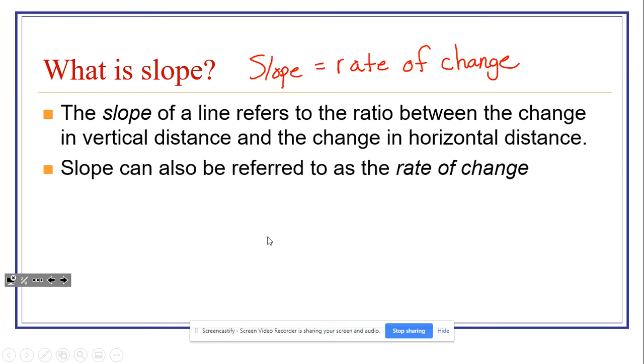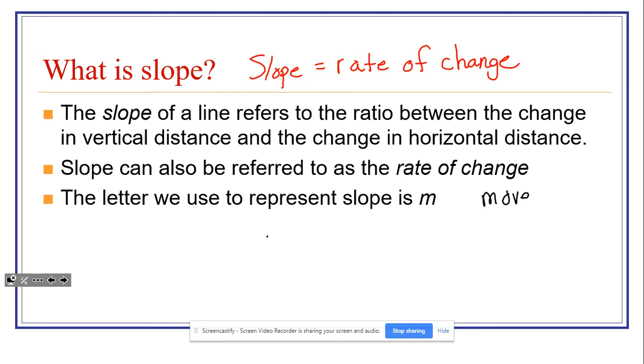And again, as we said, slope can also be referred to as rate of change. The letter that we use to represent slope is m, and the reason that we use the letter m is because slope is how you move, is how the linear function is moving.